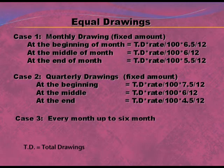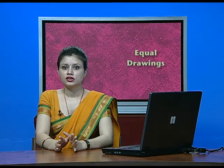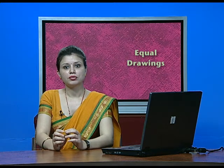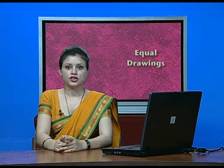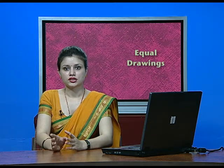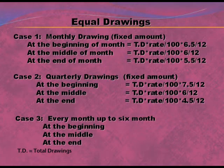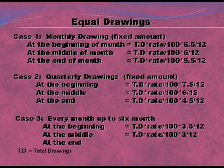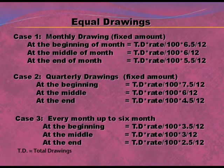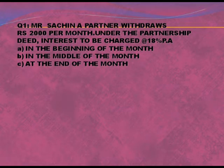The last case of equal drawing is drawings made every month for six months only. If the drawing amount is one thousand per month, then for six months it will be six thousand. At the beginning of the month the formula is: Total Drawing × Rate/100 × 3.5/12. At the middle: Total Drawing × Rate/100 × 3/12. At the end: Total Drawing × Rate/100 × 2.5/12.